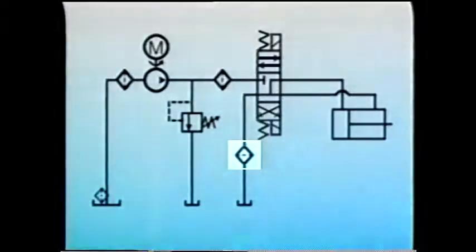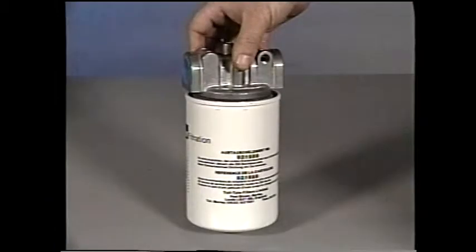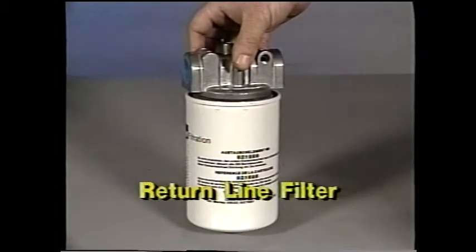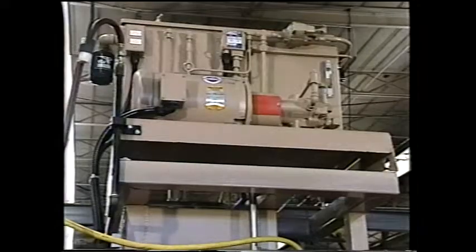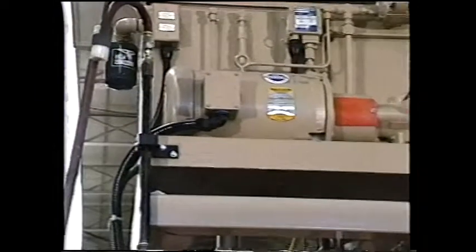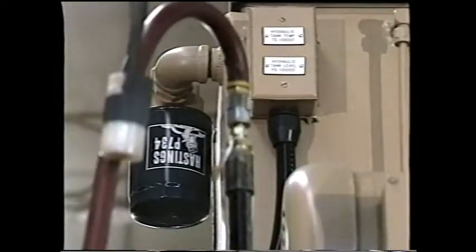Return line filters clean dirt from the system before it has a chance to return to the sump. They are installed in the return line to the sump. These filters generally have a rating from 40 microns down to 3 microns or less. Although return line filters operate under some pressure, they aren't exposed to main system pressure, so they are less expensive than pressure filters. One disadvantage of a return filter is that it only catches the dirt after it has been through the system, not before.